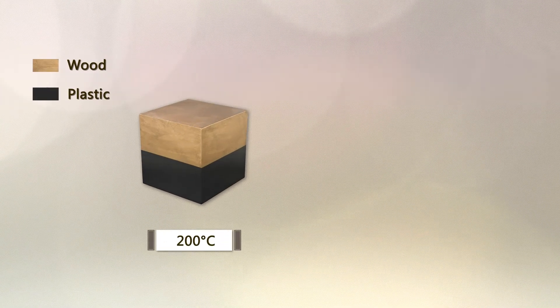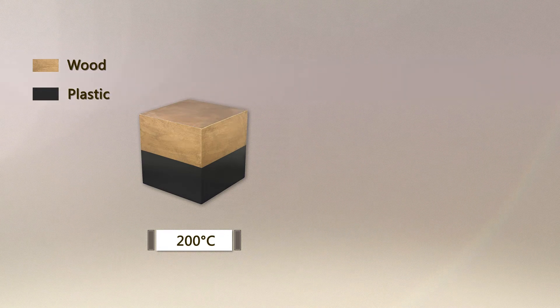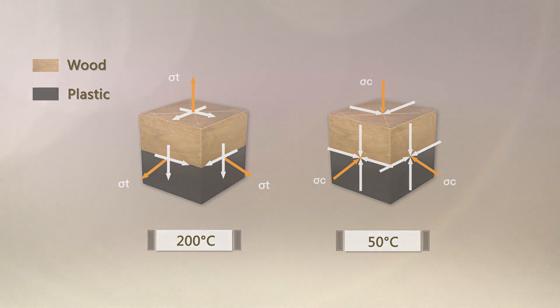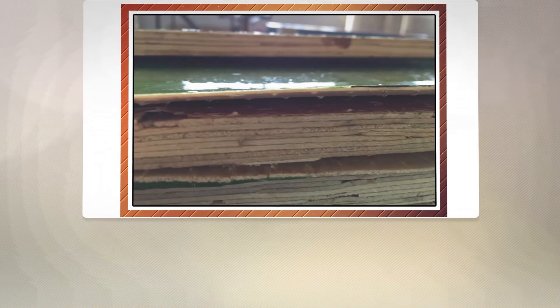During this process, as plastic goes from 220 degrees Celsius to 50, the contraction will create a tremendous force on the plywood. Any defective plywood will delaminate at this point.